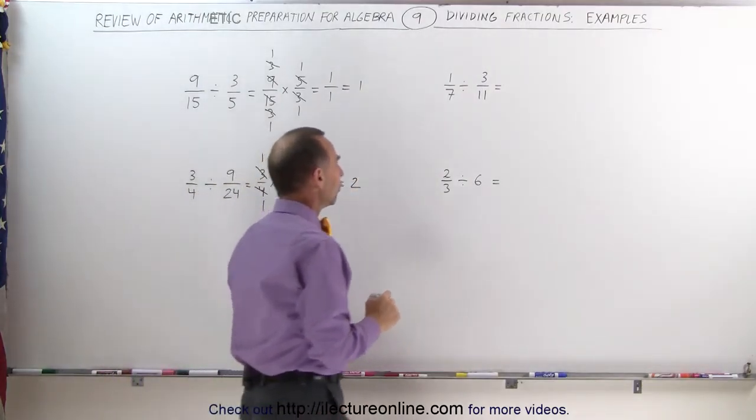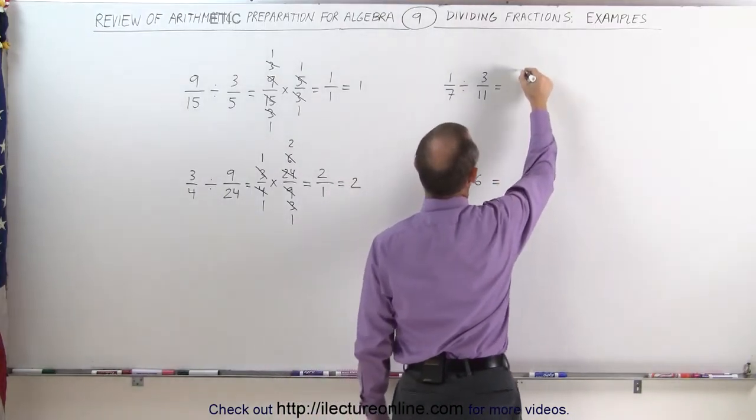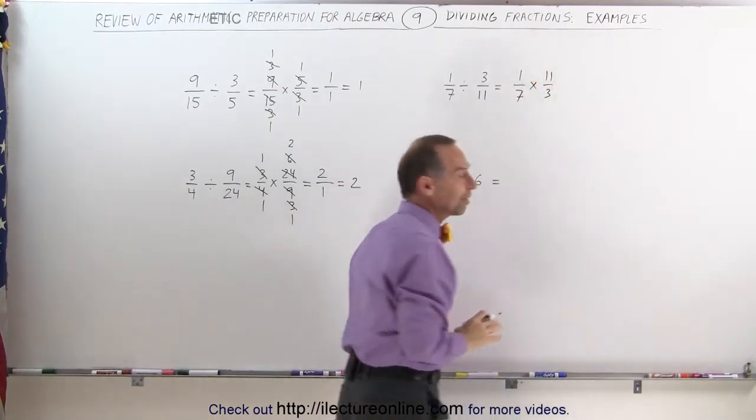Let's try that one over there: 1/7 divided by 3/11. That's the same as writing 1/7 times 11/3. Here we cannot simplify anything.